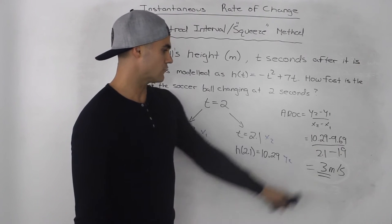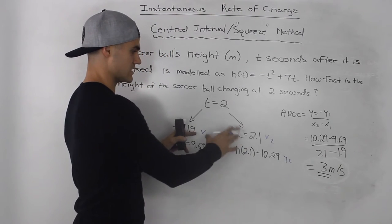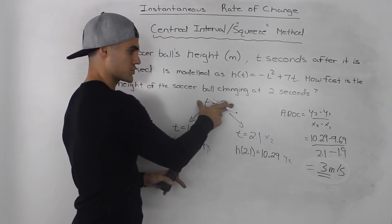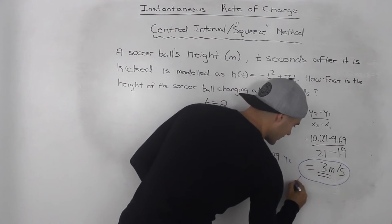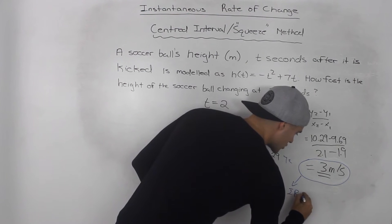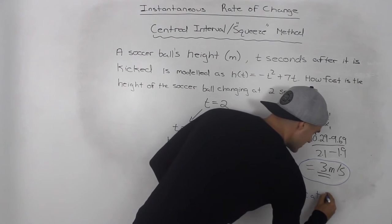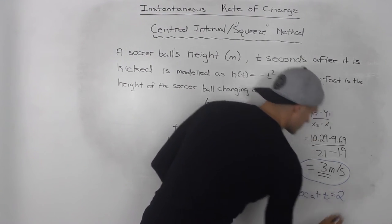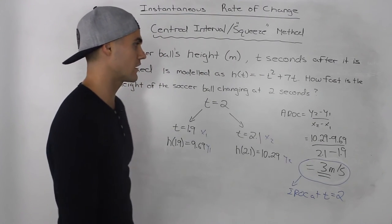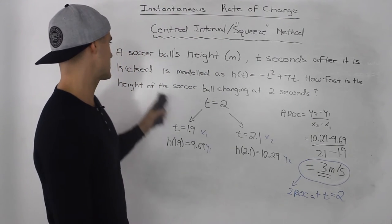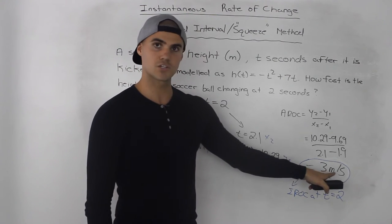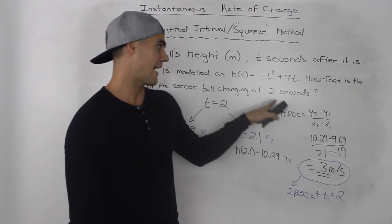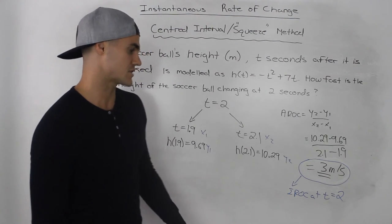So this average rate of change between these two points that are very close to 2 seconds is a good approximation for the instantaneous rate of change at t = 2 seconds, which is what we're trying to find. So the final answer is that the height of the soccer ball is changing at 3 meters per second at a time of 2 seconds.